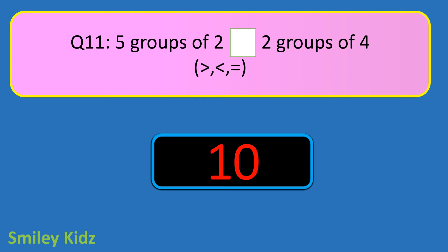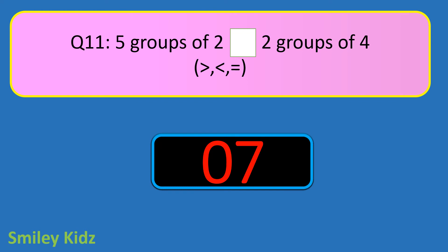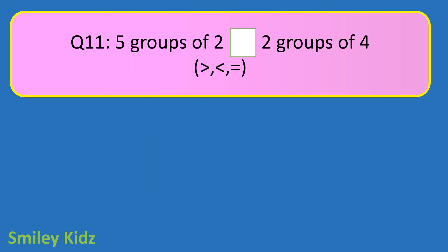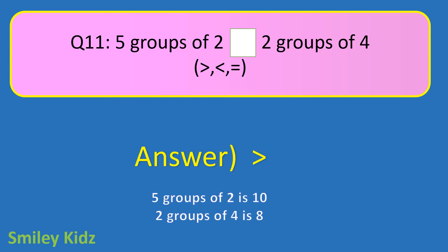Question number 11. 5 groups of 2 blank 2 groups of 4. Put the correct sign. Your time starts now. And your time is up. The right answer is greater than. 5 groups of 2 is greater than 2 groups of 4.